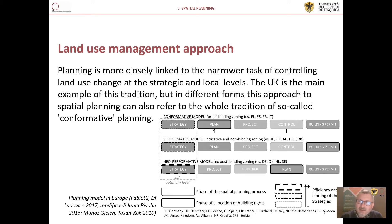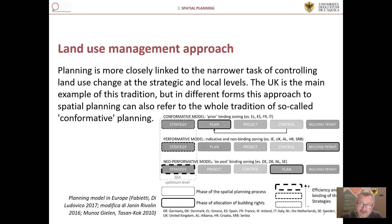The figure shows the planning models in Europe. As can be seen, there are several states, such as Italy, Spain, France and Greece, included in those models defined as prior binding zoning — the conformative model — where the zoning design and attribution of its function become a spatial aspect.